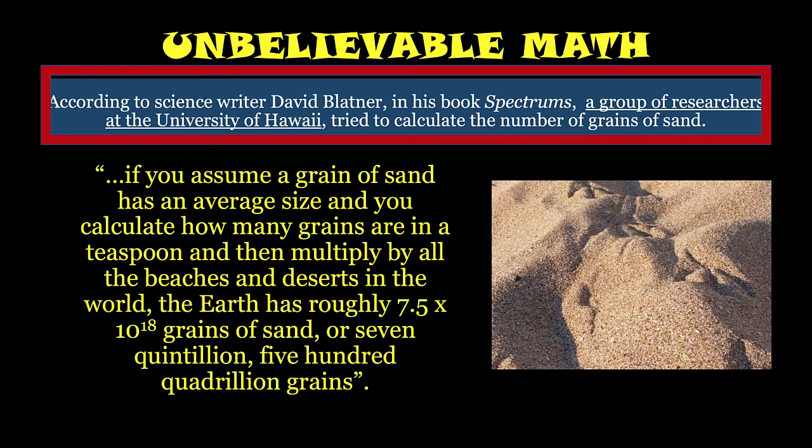If you assume a grain of sand has an average size and you calculate how many grains are in a teaspoon and then multiply by all the volume of the beaches and deserts in the world, the Earth has roughly 7.5 × 10^18 grains of sand.